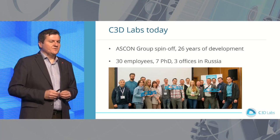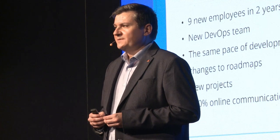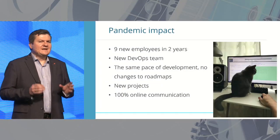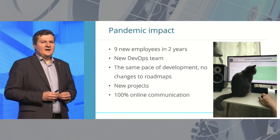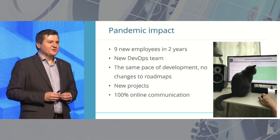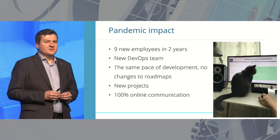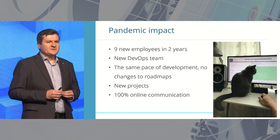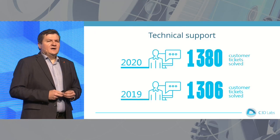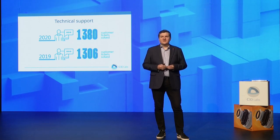Today, we have 30 staff on board, seven of them are PhD, and we are working from three locations here in Russia. The pandemic changed a lot in our life and work, but it did not slow down our development. We work exactly according to our roadmaps. Over two years, nine new employees came to our company. We opened a new DevOps department, which took over all development operations including toolkit wrappers and product delivery. We have launched two new projects, and the results will be presented by my colleagues. As a demonstration of our work, please look at the number of solved user requests — over 1,302 in two years in a row.